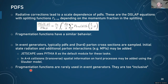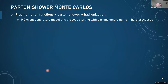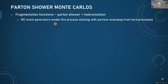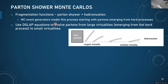Rather, what is done in event generators is to model fragmentation functions as an explicit parton shower where partons split — just as in the DGLAP equation — and then hadronize. One part is rigorous, guided by perturbative QCD; hadronization is where the really non-perturbative part sits. Monte Carlo event generators start this process with the partons emerging from the hard process, then using the DGLAP equations to evolve them from large virtualities to small virtualities.